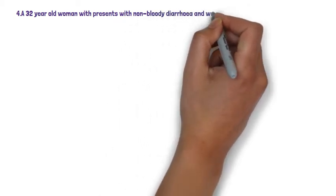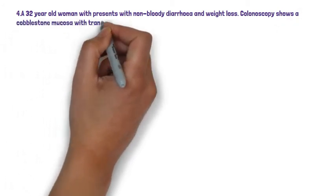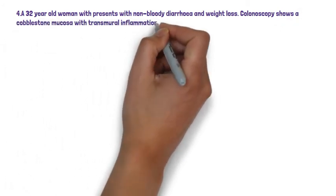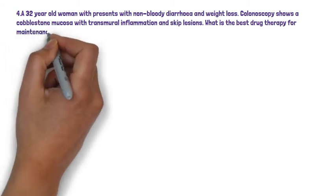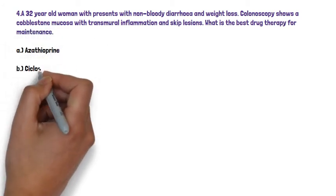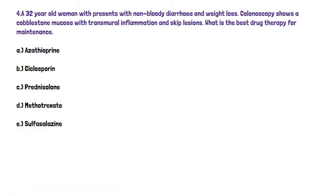Next we have question 4, which concerns a 32-year-old woman who presents with non-bloody diarrhoea and weight loss. Colonoscopy has shown a cobblestone appearance, transmural inflammation and skip lesions. What is the best drug therapy for maintenance? Options are: A. Azathioprine, B. Ciclosporin, C. Prednisolone, D. Methotrexate, or E. Sulfasalazine.